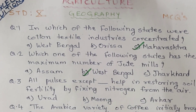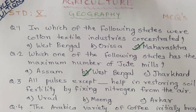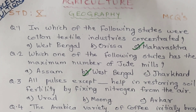Question 3. All pulses help in restoring soil fertility by fixing nitrogen from the air. Which of the following is an exception? A. Urad. B. Moong. C. Arhar. The correct answer is C. Arhar.